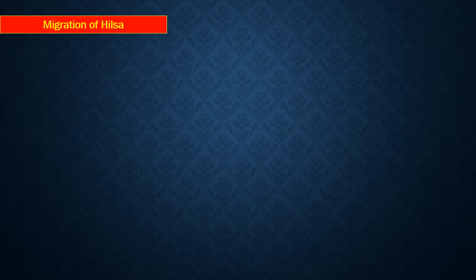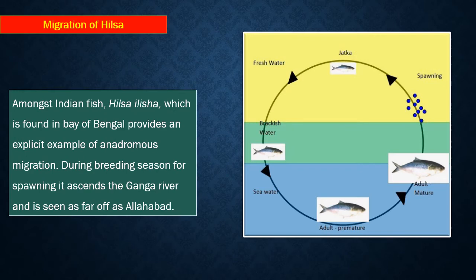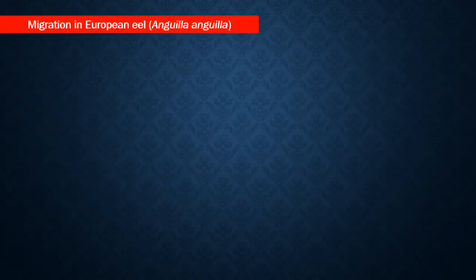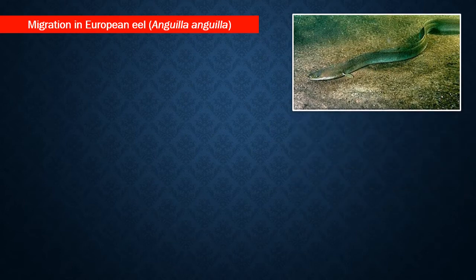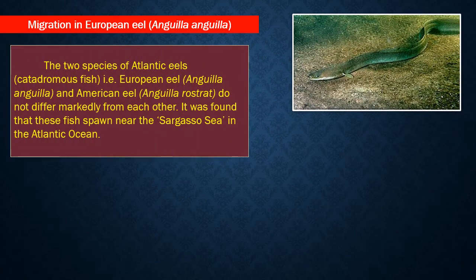Migration of Hilsa fish. Amongst Indian fish, Hilsa elisa, which is found in the Bay of Bengal, provides an excellent example of anadromous migration. During the breeding season for spawning, it ascends the Ganga River and is seen as far as Allahabad. The two species of Atlantic eels, European eel and American eel, do not differ markedly from each other. It was found that these fish spawn near the Sargasso Sea in the Atlantic Ocean, southeast of Bermuda.